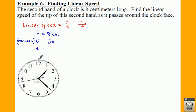Your time, well if we're talking about a second hand, the second hand goes around a clock in a total of 60 seconds per minute. So 60 seconds is the time it takes to get around the clock. If we plug these values into our equation, we're going to take our eight centimeters times our two pi radians and divide that by 60 seconds.